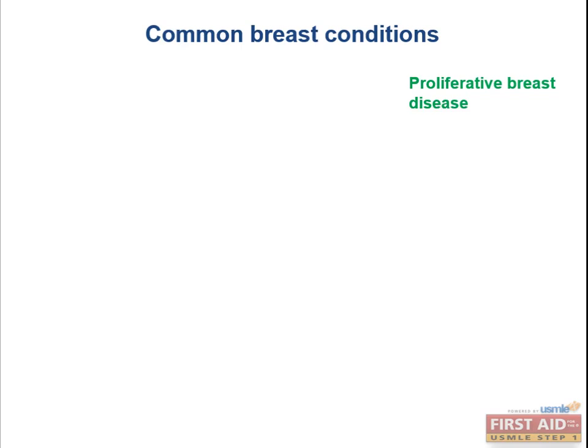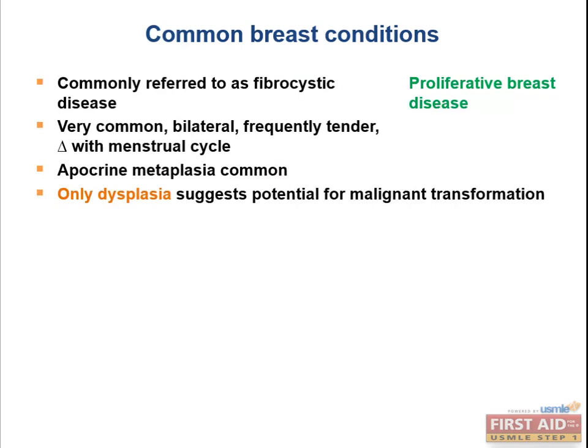Common breast conditions: proliferative disease of the breast, more commonly referred to as fibrocystic change. Don't confuse this with fibroadenoma, where fibroadenoma was our solitary lesion in young women under 35 — it was mobile, rubbery, and solitary.